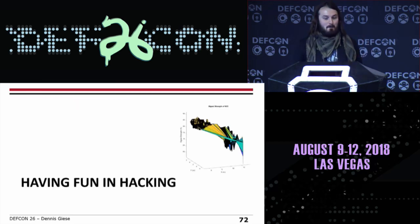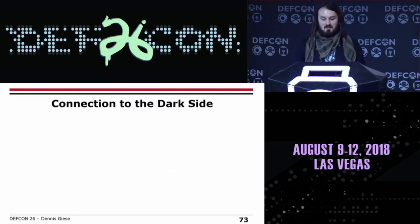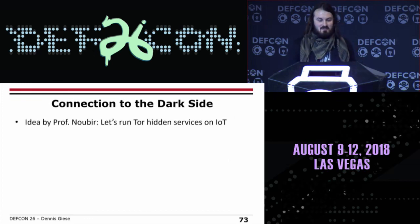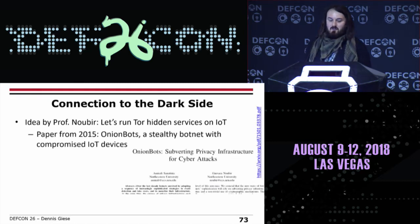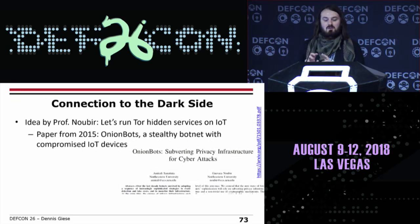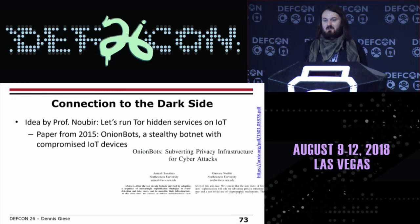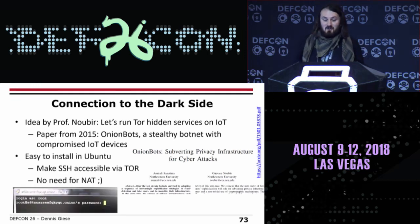Here are some examples of what you can do with them. The first case: getting a connection to the dark side. This was an idea by Professor Nubir — can this vacuum cleaner run Tor? And it can. So let's run a Tor hidden service on it. The reason: there's a 2015 paper describing OnionBots, where you use Tor to create a stealthy botnet with compromised IoT devices communicating with neighbor devices so it can't really be detected. Installing Tor is easy since it's Ubuntu — just install the Tor package. You can make SSH accessible over Tor with no need for port forwarding, so you can access your vacuum cleaner remotely.